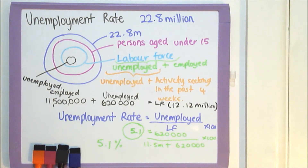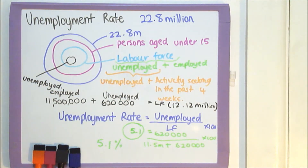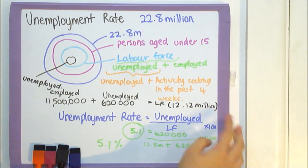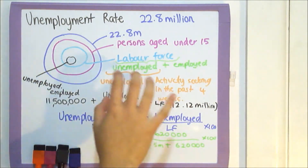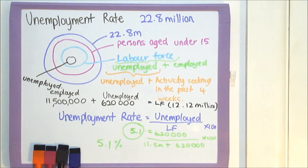I hope that helped. Just to go through it again: the unemployment rate is the unemployed over the labour force; the labour force is the unemployed and the employed; and the unemployed is those unemployed plus actively seeking work within the span of four weeks.